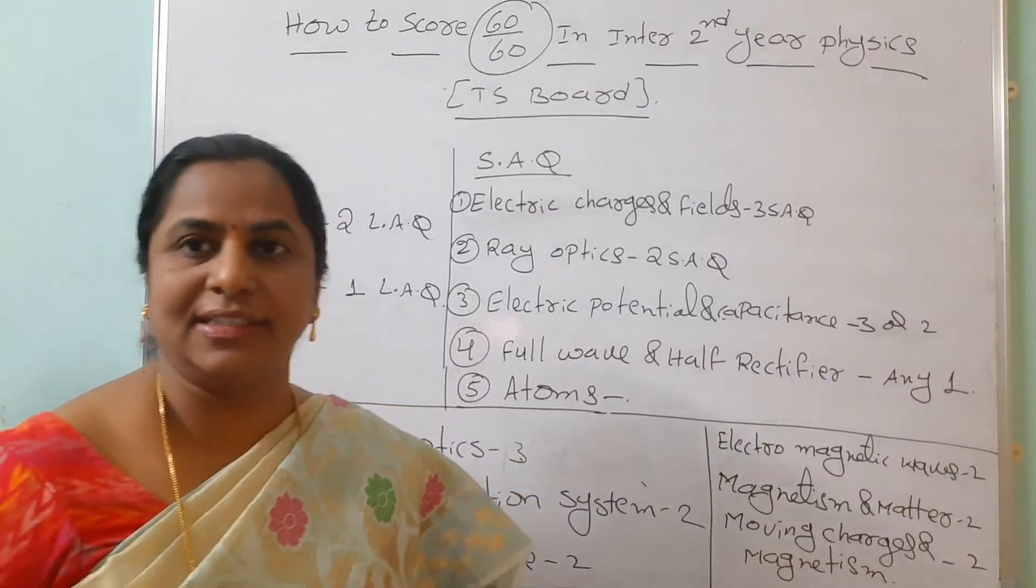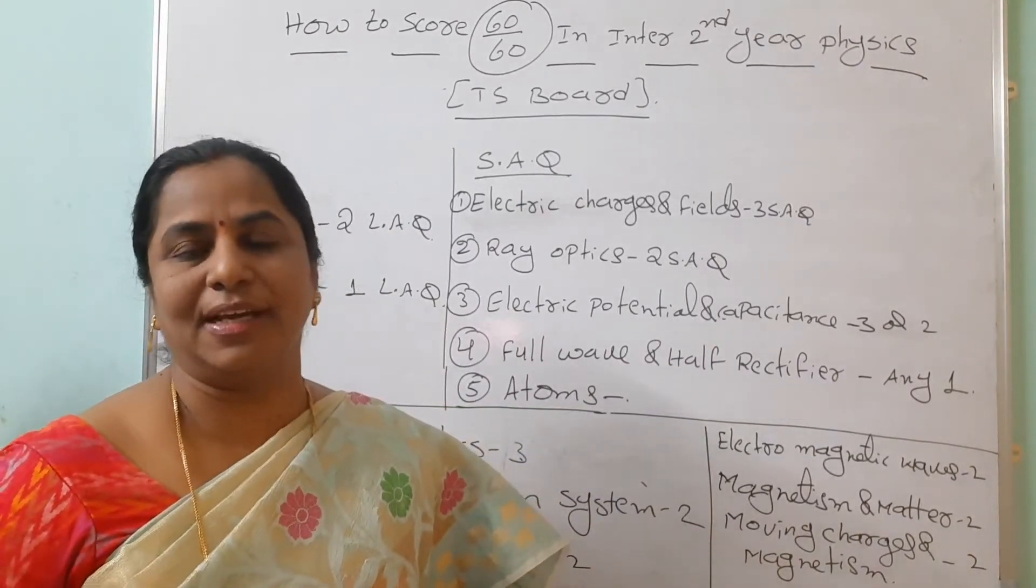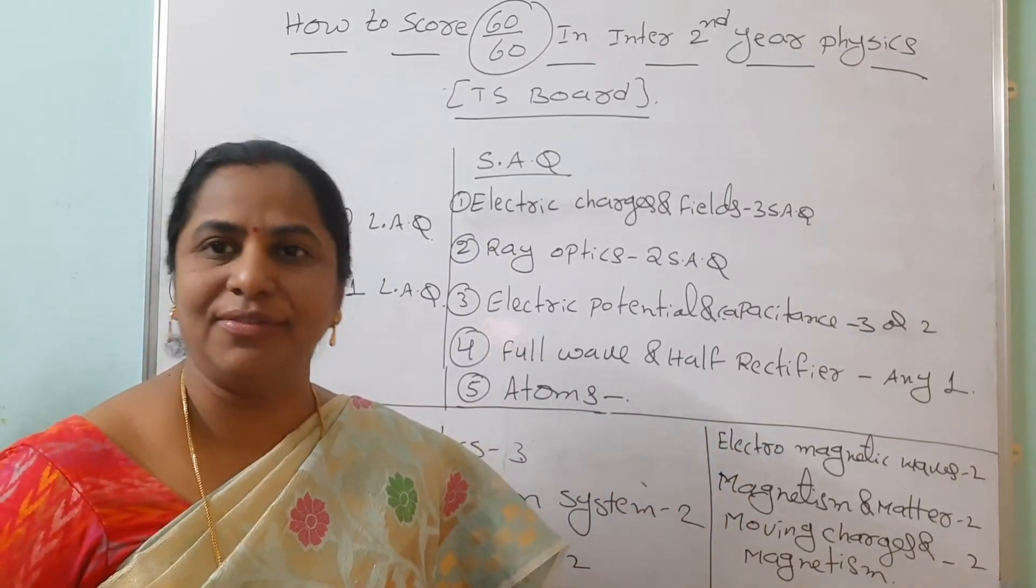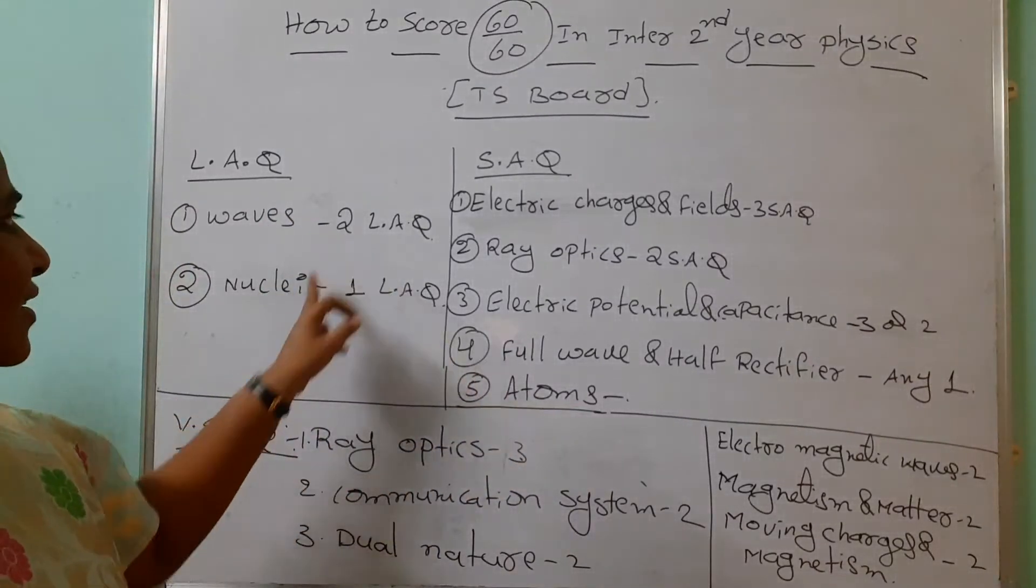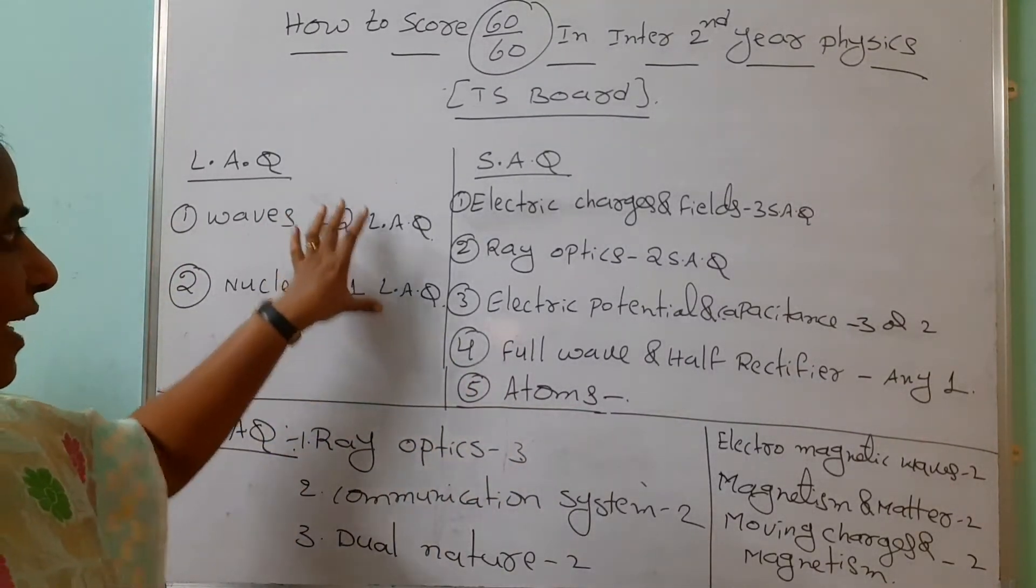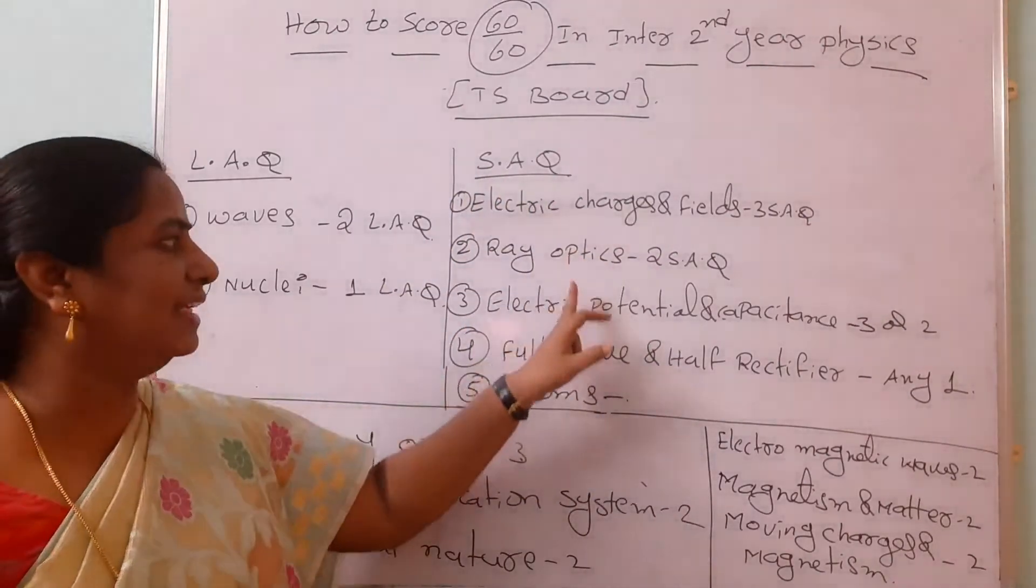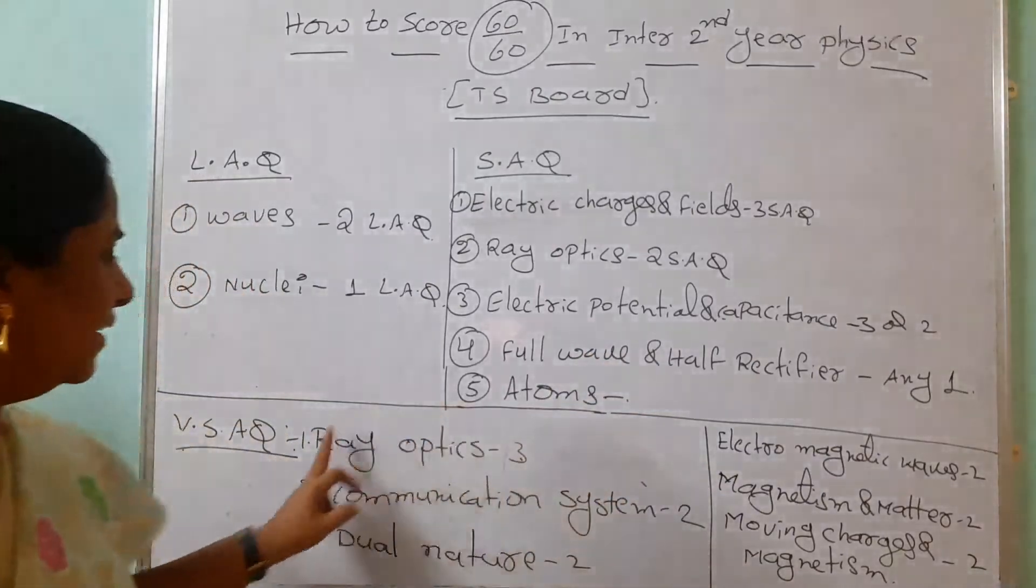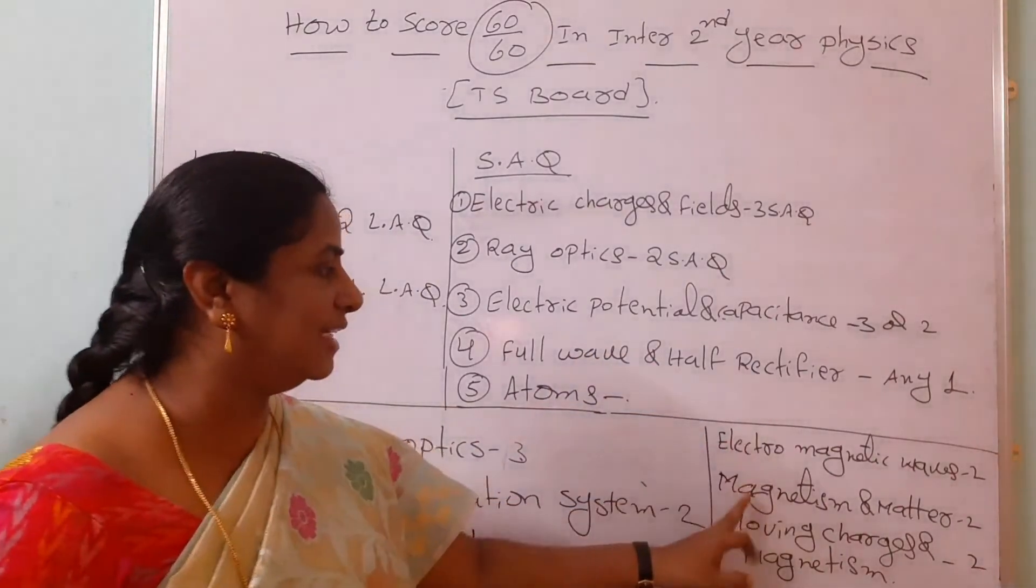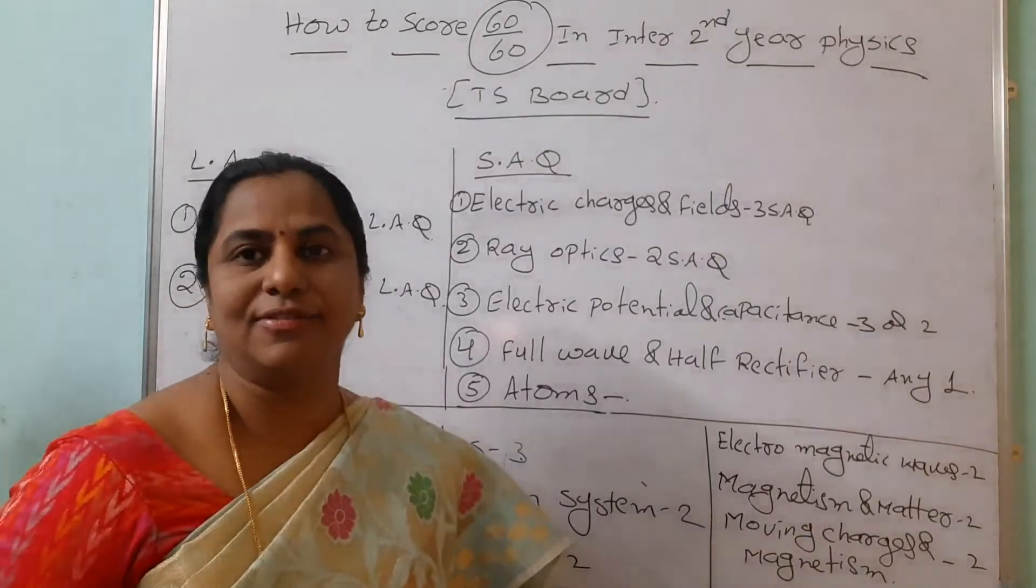If you are preparing thirteen VSAQs, definitely you can give ten VSAQs because this year you are having choice from the very short answer question side also. So don't confuse. Waves, nuclear chapter you should learn - you can write two LAQs. These are the SAQs. Even if you are reading these three chapters, you can give six SAQs. And here, at least if you read these five chapters, you can give ten VSAQs from that.